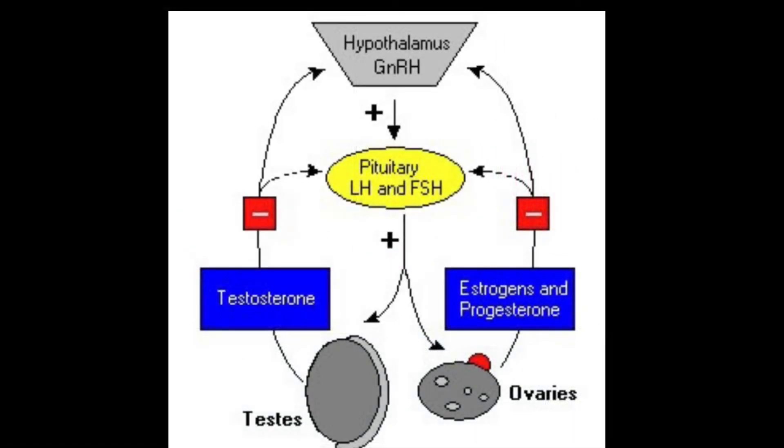Ovaries lead to the production of estrogen, which signals to the pituitary gland to decrease the release of FSH and to produce more LH, causing ovulation and FSH and LH levels to drop.